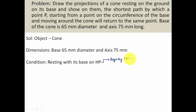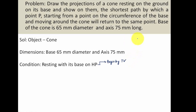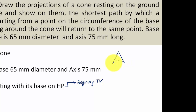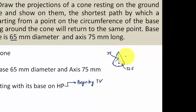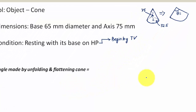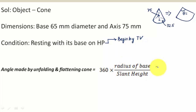Let me make a rough diagram of a cone — that's the cone, that's the axis, and that's the base radius. The diameter is 65 mm so the radius is 32.5 mm, and the height is 75 mm. When you unfold this cone it becomes a sector of a circle, and the angle it subtends — let's call it theta — can be calculated using the formula: radius of base divided by slant height.